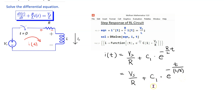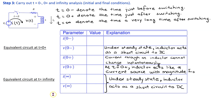To find the complete solution, we still need to determine the arbitrary constant C1. We carry out the initial and final value analysis. Let T equals 0 minus denote the time just before switching, T equals 0 plus the time just after switching, and T equals infinity the time a very long time after switching has occurred.